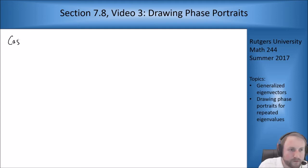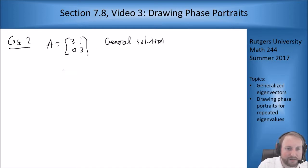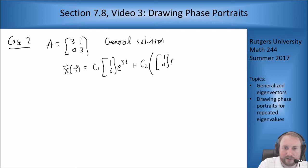Now let's look at case two. Case two, this was our matrix [3 1; 0 3] where we did not have enough eigenvectors, and our general solution was x(t) = c₁[1;0]e³ᵗ + c₂([1;0]te³ᵗ + [0;1]e³ᵗ). Let's start drawing our phase portrait here.